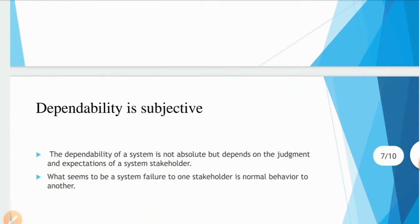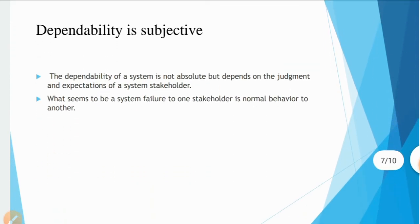Dependability is subjective. The dependability of a system is not absolute but depends on the judgment and expectations of system stakeholders. Whenever stakeholders evaluate your system, they will check expectations versus execution — that is, all the expectations a user has should be fulfilled by your system. What seems to be a system failure to one stakeholder may be normal behavior to another.